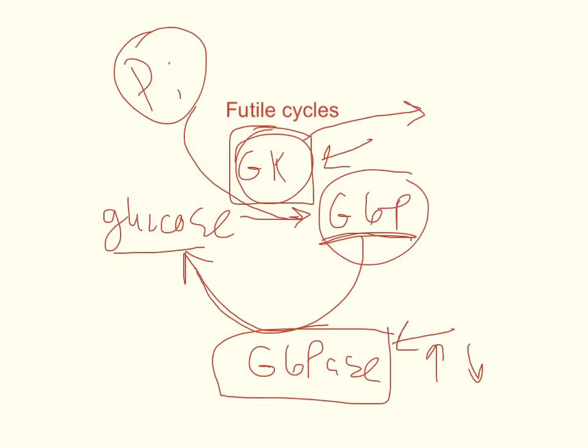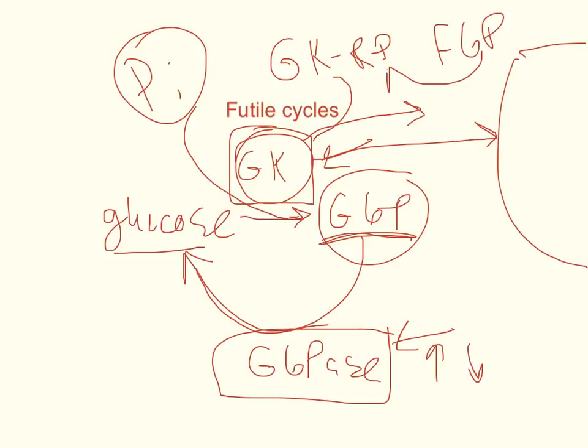Now the way that happens actually, there's a glucokinase regulatory protein. And when it's active, it takes glucokinase and shunts it into the nucleus of the cell. And when it's in the nucleus, it can't act on glucose. So it's completely off in that matter. And actually, fructose 6-phosphate is what activates the glucokinase regulatory protein.